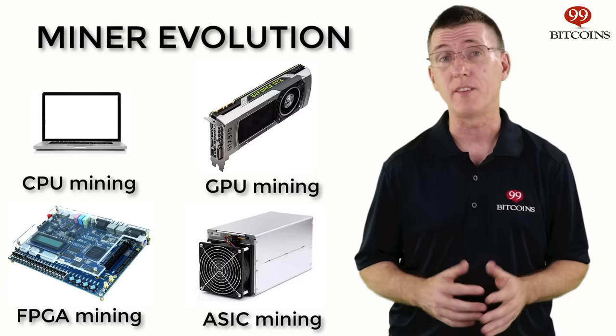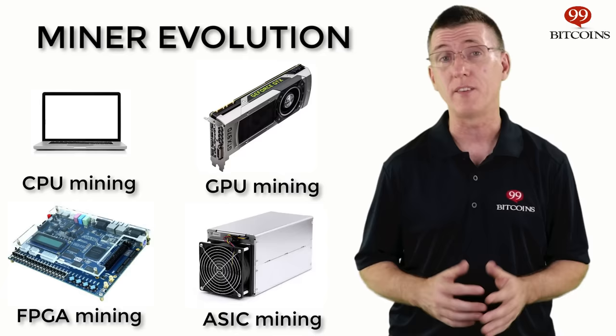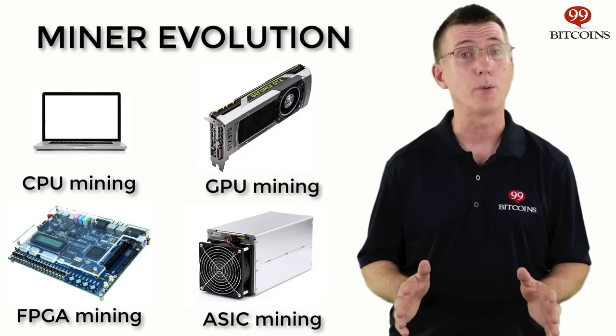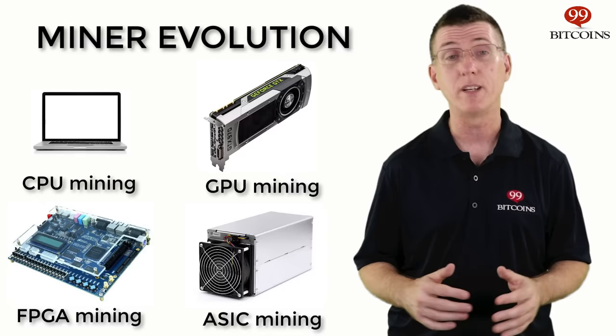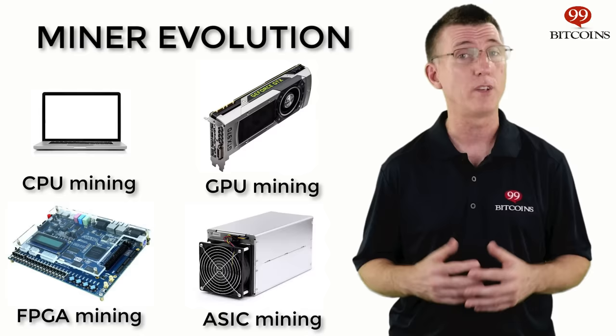Around 2013, a new breed of miner was introduced: the ASIC miner. ASIC stands for Application Specific Integrated Circuit. These were pieces of hardware manufactured solely for the purpose of mining Bitcoin. Unlike GPUs, CPUs, and FPGAs, they couldn't be used for anything else — their function was hard-coded into the machines. ASIC miners are the current mining standard.